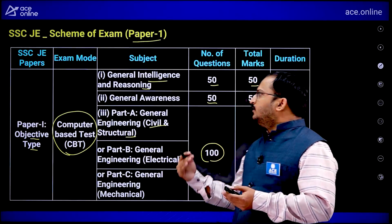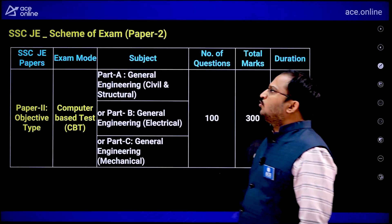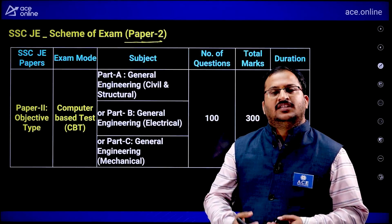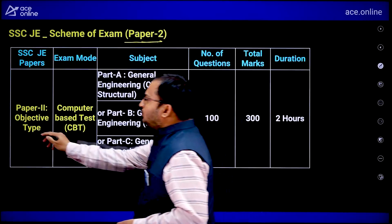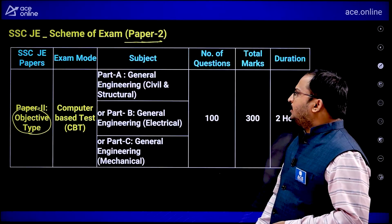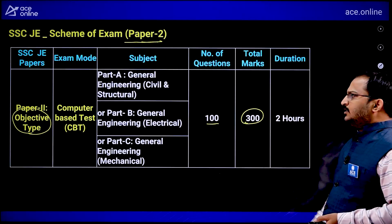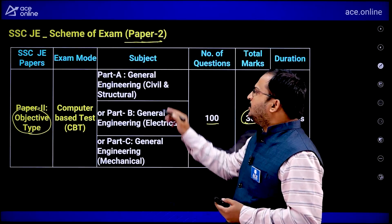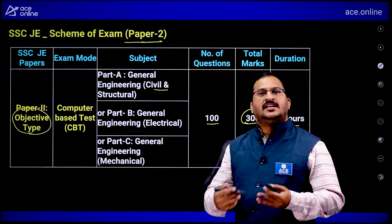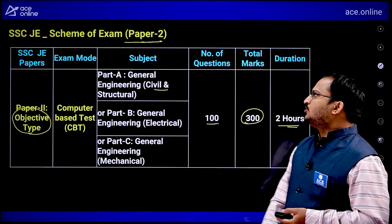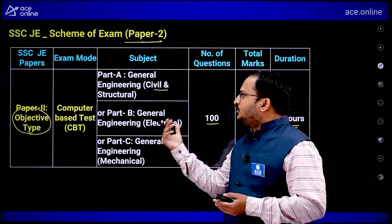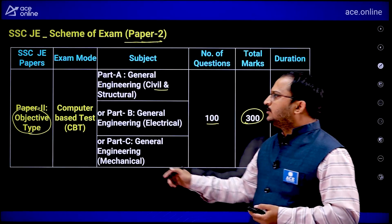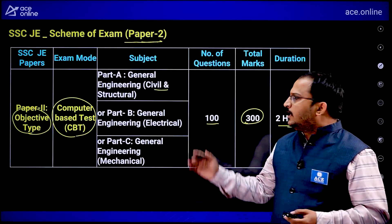Paper 2 has been significantly updated. Previously it was a descriptive-type examination, but now Paper 2 is also a computer-based test with all objective multiple-choice questions. It has 100 questions carrying 300 marks — each question carries 3 marks — and the total duration is 2 hours. This is related to technical subjects only; candidates must opt for the relevant part depending on their branch of Diploma or engineering.